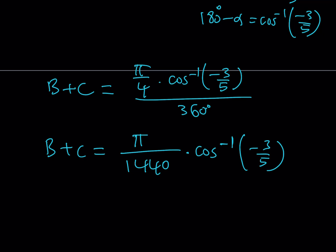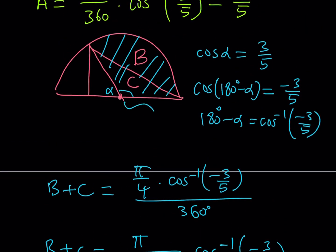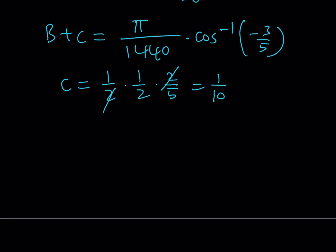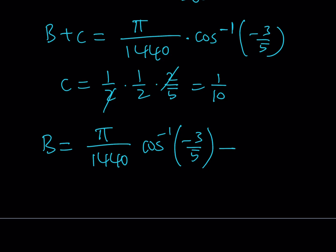Region C is a triangle whose base is 1/2 (the radius of the semicircle) and whose height is 2/5 (the y-coordinate of the intersection point). So C = (1/2)·(1/2)·(2/5) = 1/10. Since I know B + C and I know C, I can find B = (π/1440)·cos⁻¹(−3/5) − 1/10.